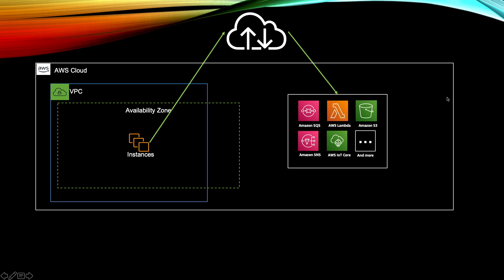Even though these services are part of your AWS cloud and they are within the AWS network, they are not part of your private cloud — they're part of the AWS public cloud. But to access them, your instance has to send its request out to the public internet. There was no way to connect privately to these services, so every request would go to the public internet and then be routed back to your instances.